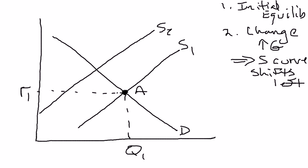At the initial real interest rate R1, let's pretend that real interest rates don't adjust quickly — they adjust slowly over time. So let's say initially the real interest rate stays the same at R2. The question is: what happens in this market? If the supply curve shifts to the left and the real interest rate stays at R2, we need to find out whether there's a shortage or a surplus, which means we need to find the new quantity supplied and the new quantity demanded of loanable funds.